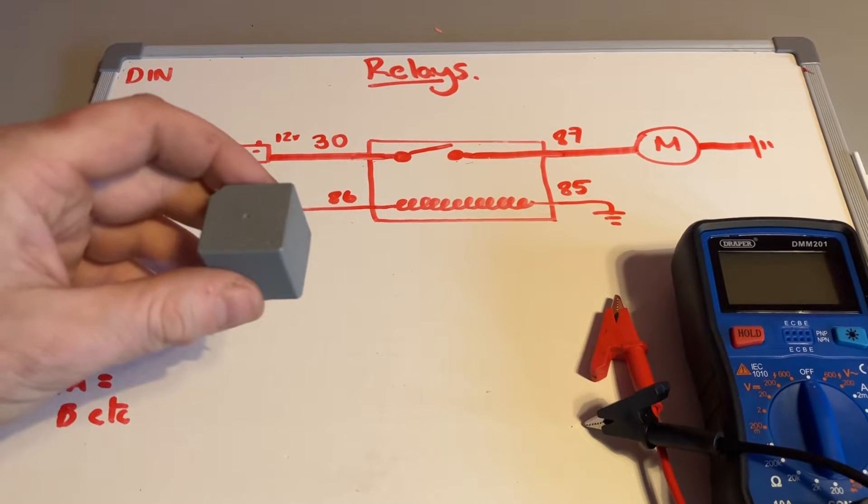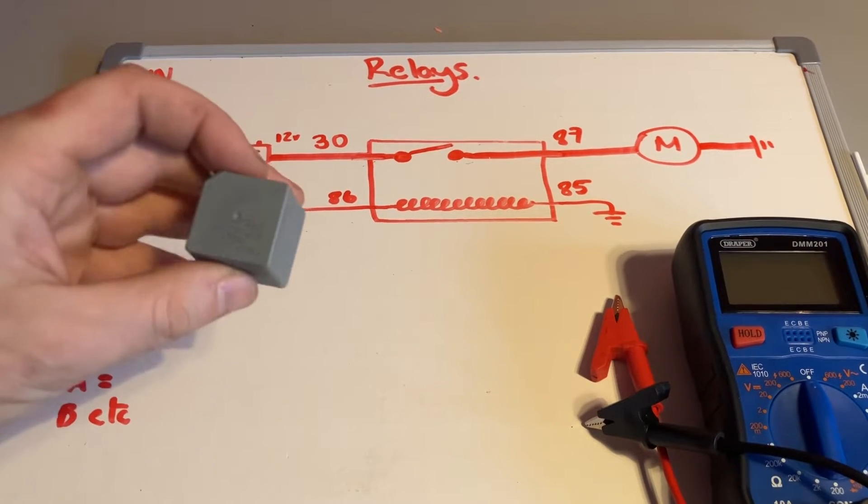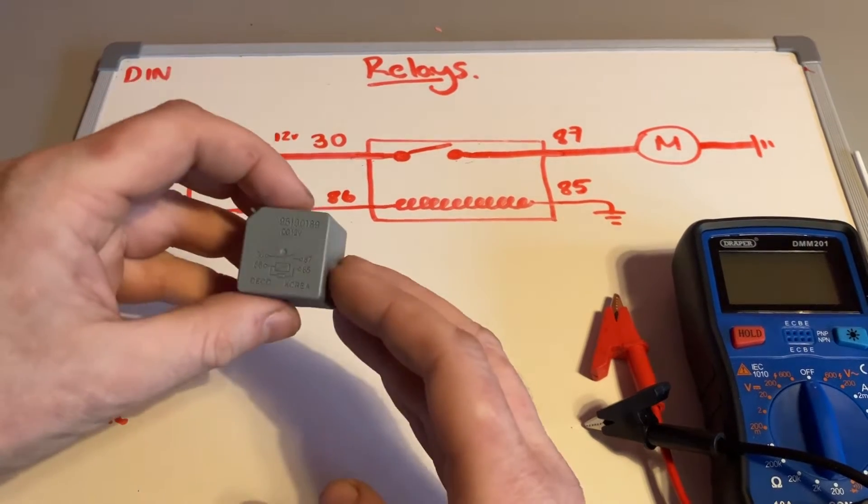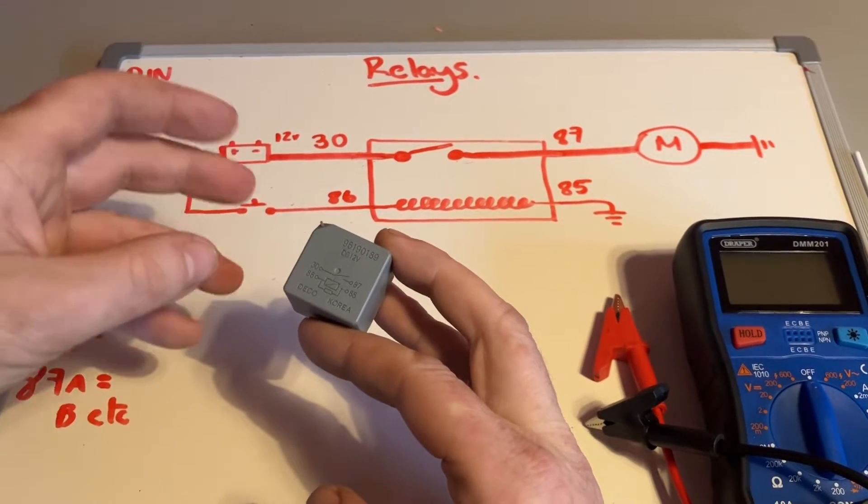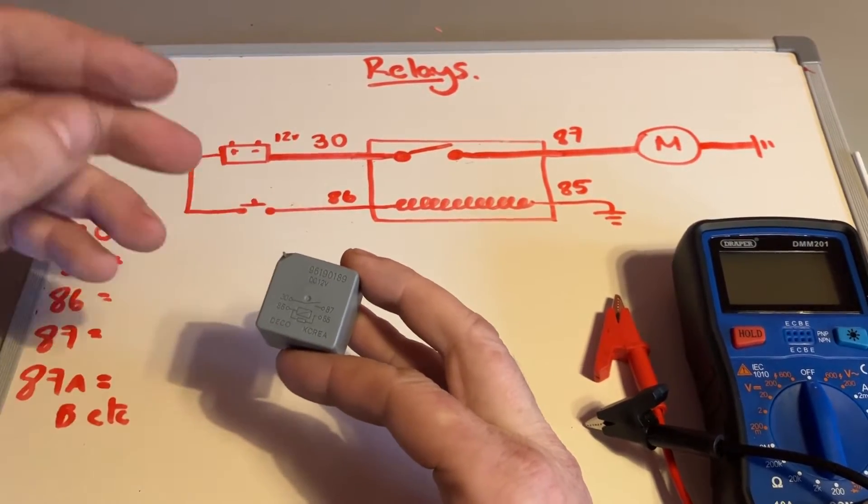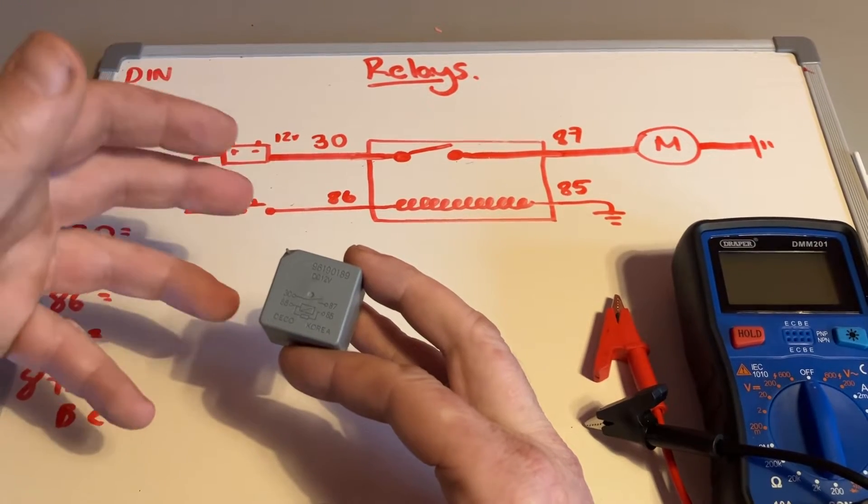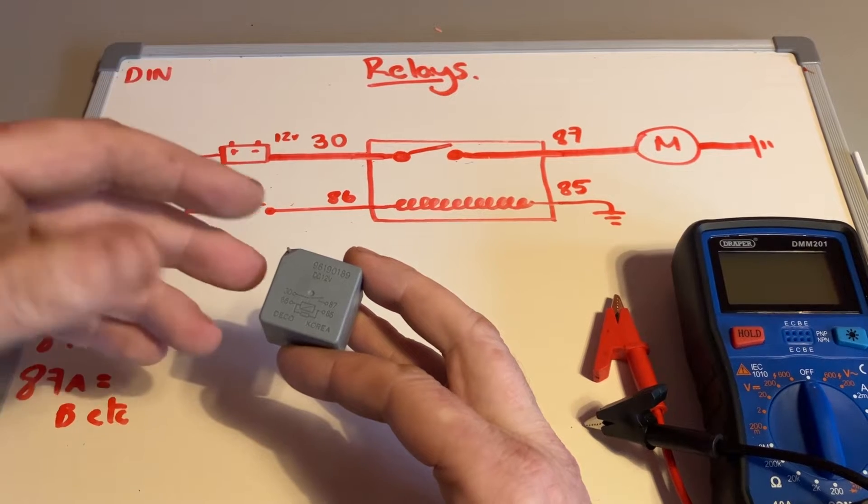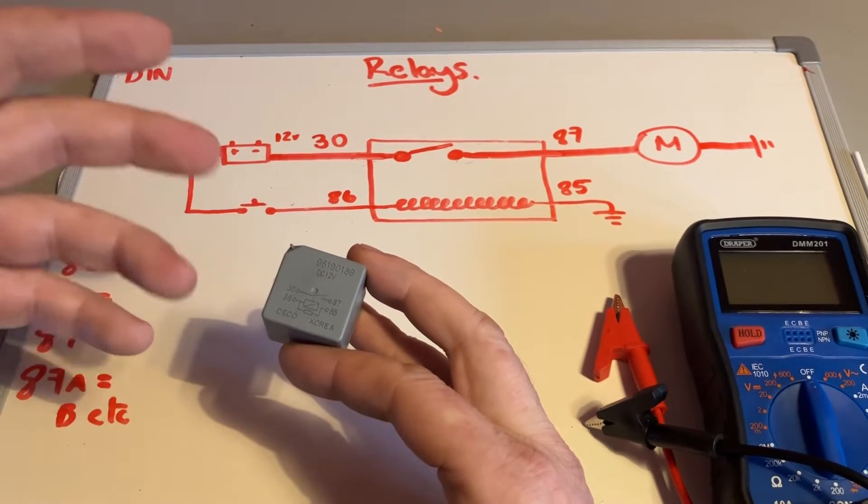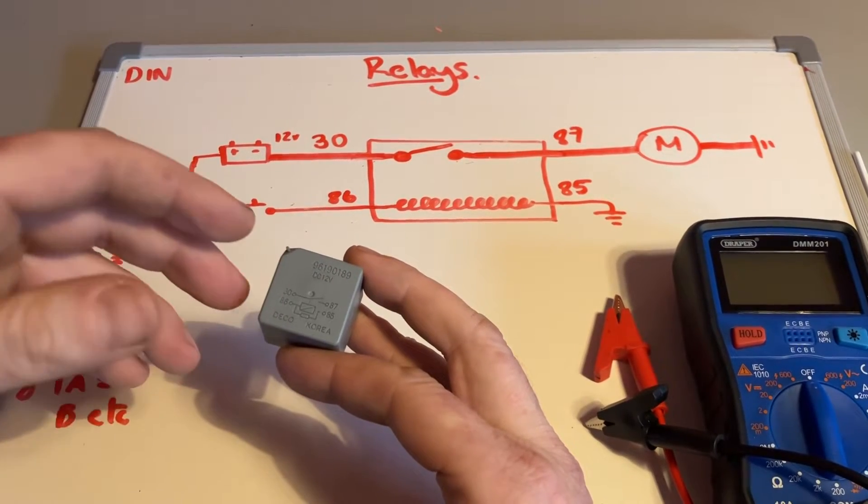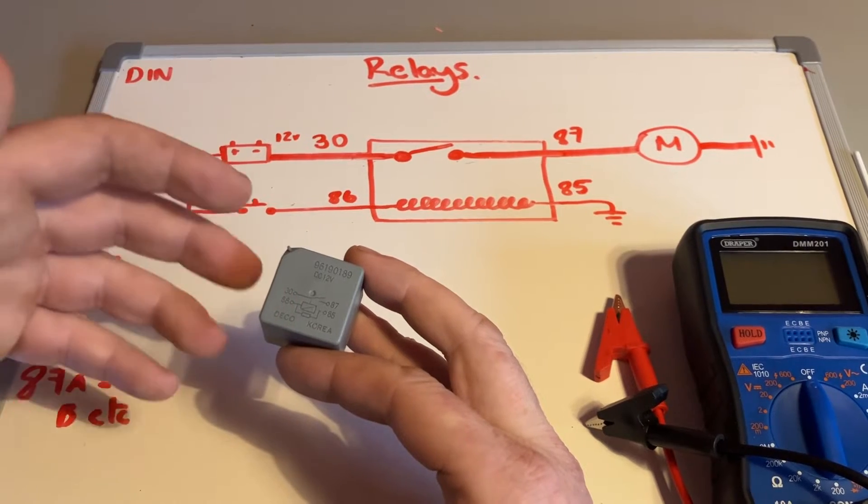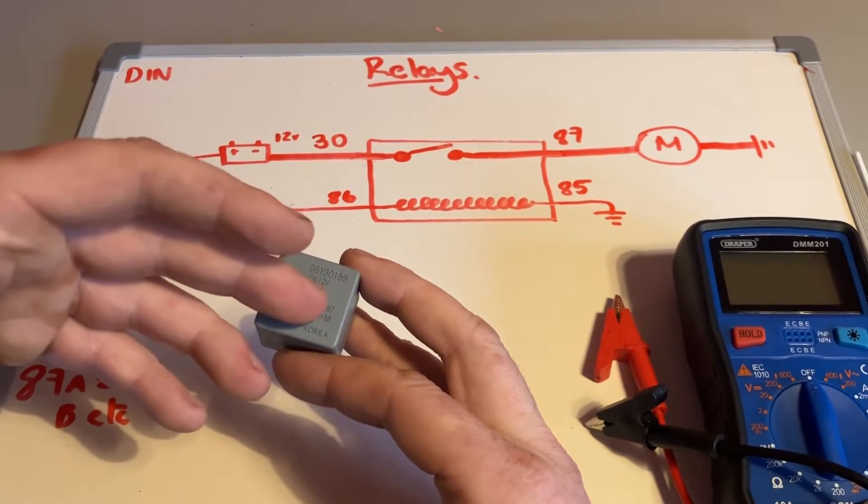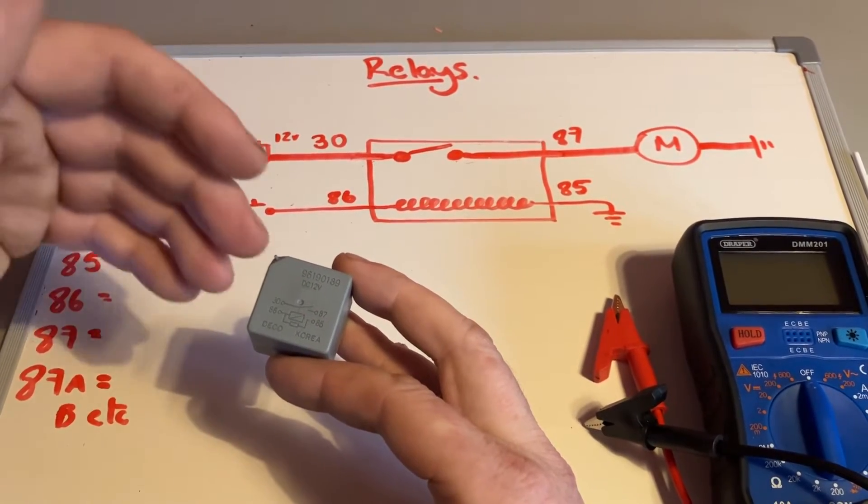The reason we use them: three reasons really. One is to keep high voltage components away from the driver. So if you're pushing buttons, flicking switches in the car, you don't really want all that current behind the dashboard - it adds risk. And also, by using a smaller wire and a smaller circuit to control a relay which will then power a bigger circuit, you're reducing weight, cost, and space.